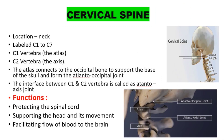The cervical spine has seven bones. It is located below the skull and is the neck part. You can see C1 to C7 here. C1 is also called the atlas and C2 is called the axis.